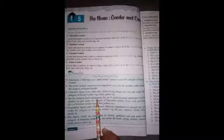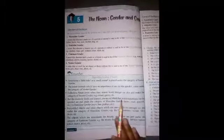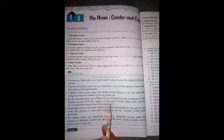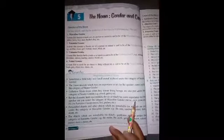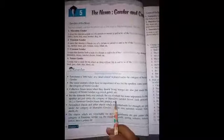But the domestic birds and animals, lekin jo paaltu pashu aur bhi janwar jine hum paalte hain, the sex of which is some importance for the speaker are put under the category of masculine gender. Unko hum masculine gender ke antargat dalenge. Jaise ki horse, cock, peacock, etc. Feminine gender mein dalenge mare, hen, peahen, etc.